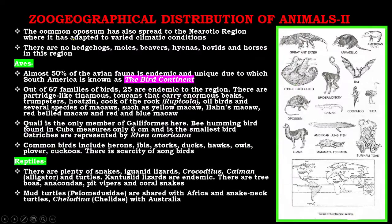The common opossum has also spread to the Nearctic region, where it has adapted to varied climatic conditions. There are no hedgehogs, moles, beavers, hyenas, rabbits, or horses in the Neotropical region. Almost 50% of the avian fauna is endemic and unique, due to which South America is known as the 'bird continent.' Out of 67 families of birds, 25 are endemic to the region.